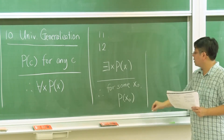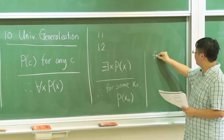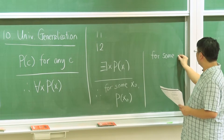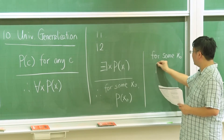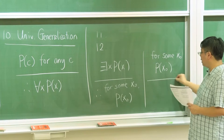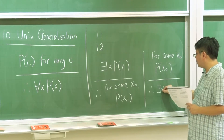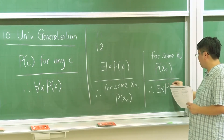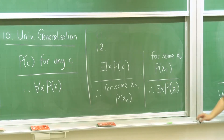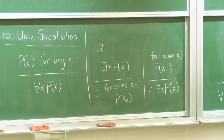Similarly, for existential generalization: if I know that for some particular x₀, P(x₀) is true, then I can conclude that 'there exists x such that P(x)' is also true. That's all twelve inference rules.